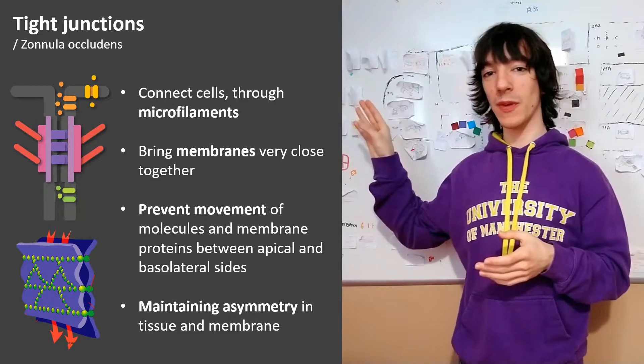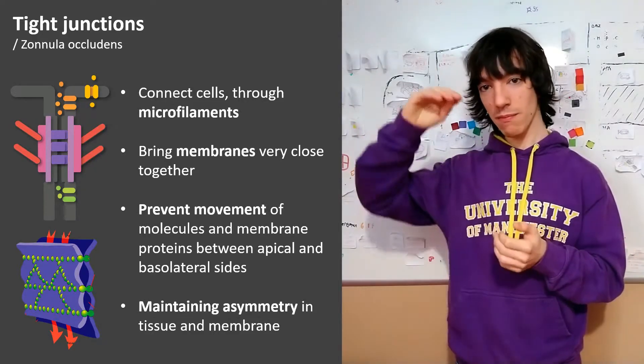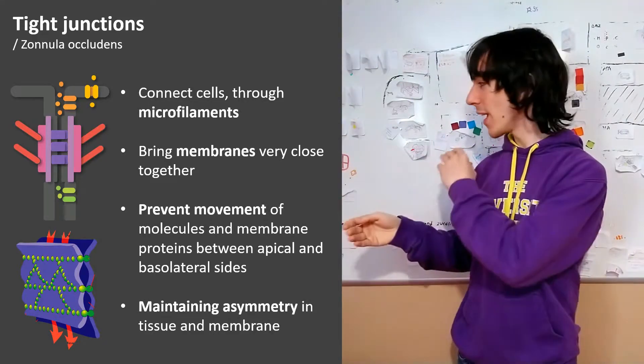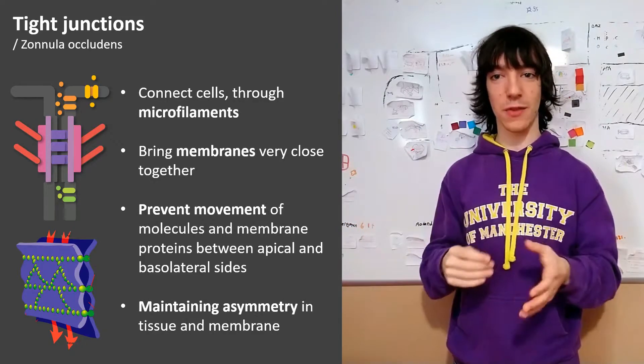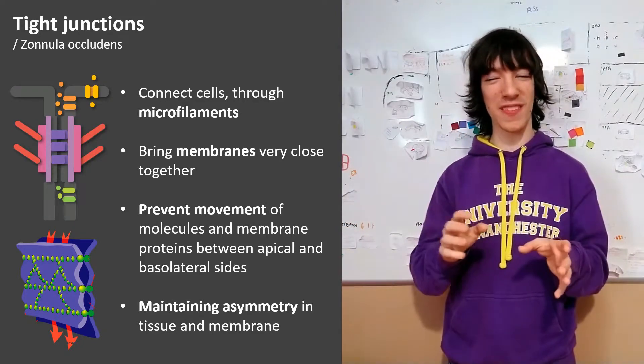For example, we have these orange proteins in the apical side of the cell, the top cell, and have these green proteins in the basolateral side of the cell, the rest of the cell, everything that is not apical.